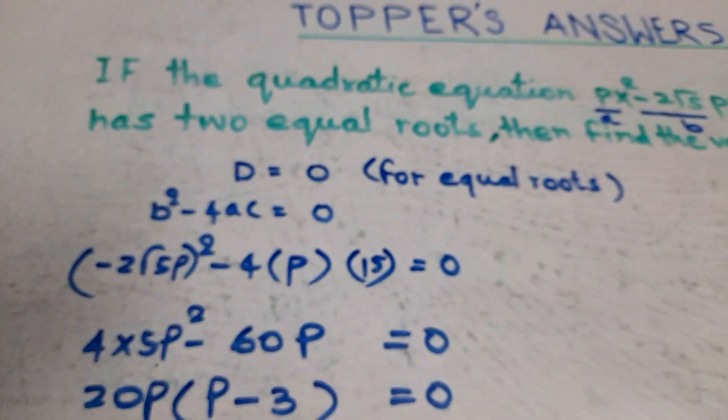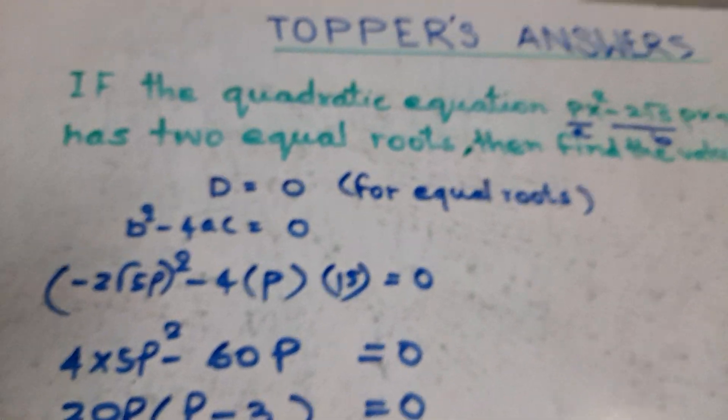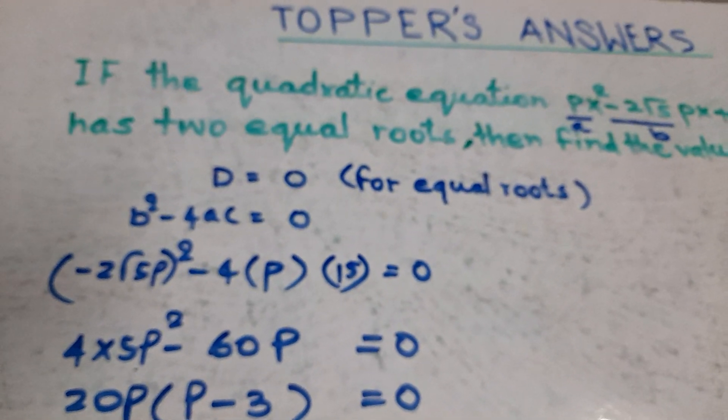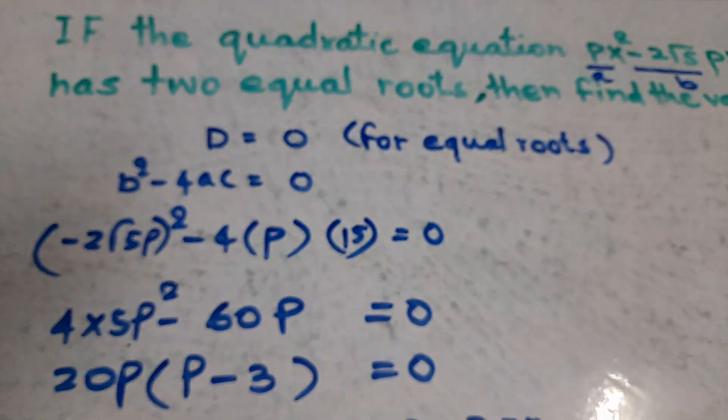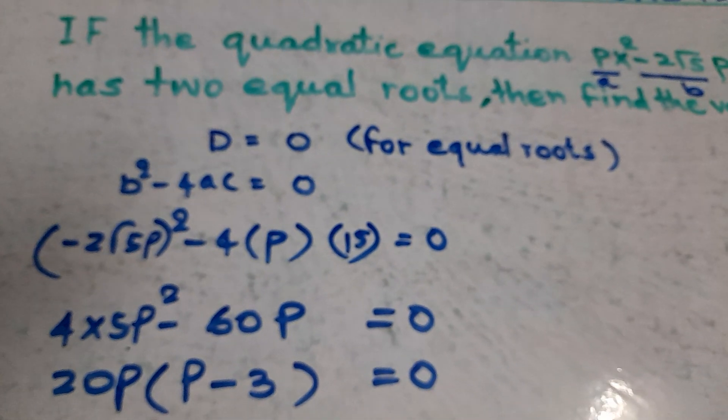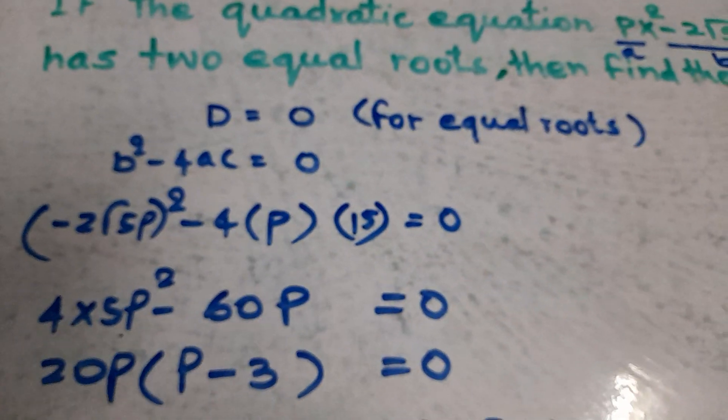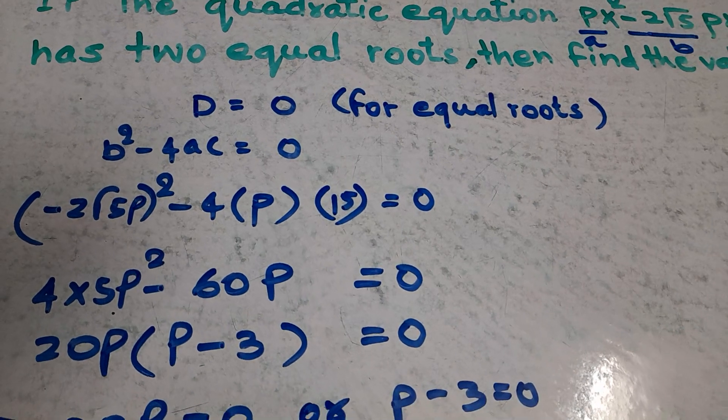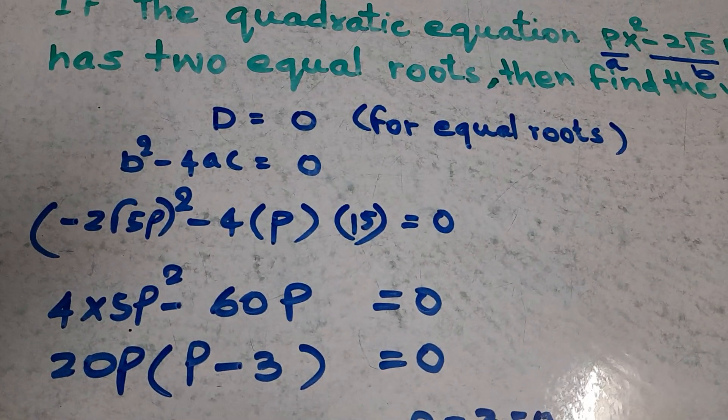This is the solution from the toppers of 2020. For equal roots, D equals 0. You know the discriminant formula: B squared minus 4AC equals 0.